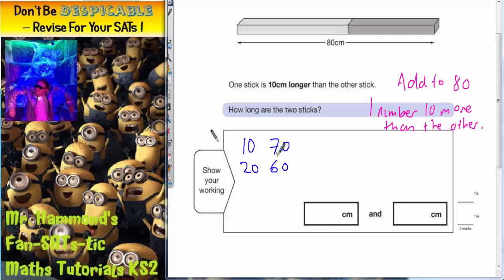So what we need to do is get the gap smaller because the gap should only be 10. So if we went 30 here, this would come down to 50. 30 and 50 makes 80.